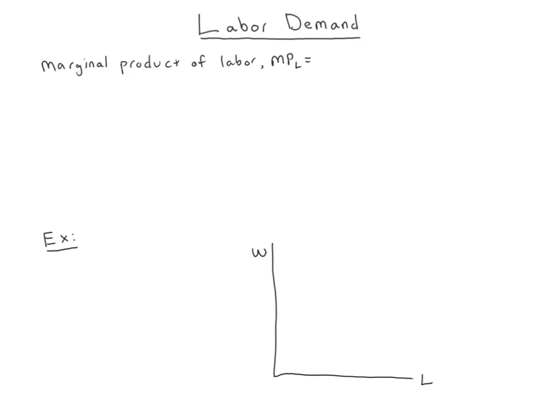Marginal quantities are always about extra. So this is the extra output you get — the extra product — for some number of extra units of labor. If we were going to give an equation for marginal product of labor, MPL, it would be extra output — delta Q — over extra labor hired — delta L. We'll use L to denote labor.